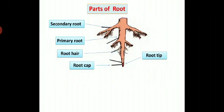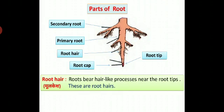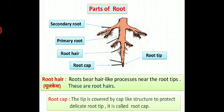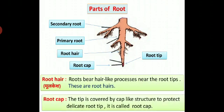Parts of root. Observe this diagram. You can see different parts of root like primary root, secondary root, root hair, root cap and root tip. Root hair: roots bear hair-like processes near the root tips. These are root hairs. Root cap: the tip is covered by cap-like structure to protect delicate root tip. It is called root cap.